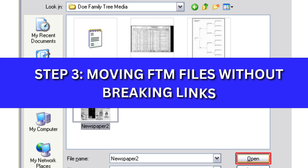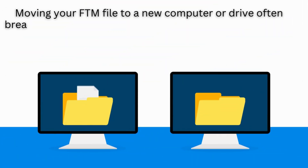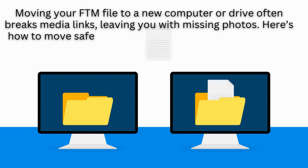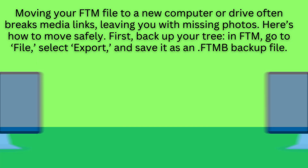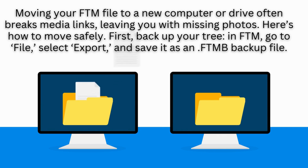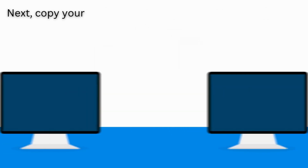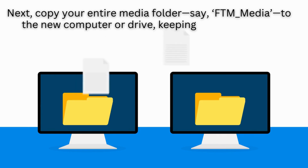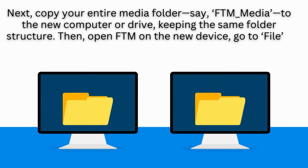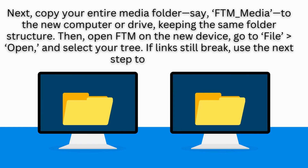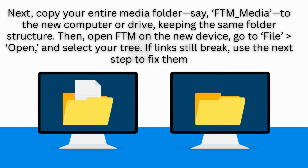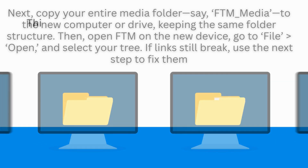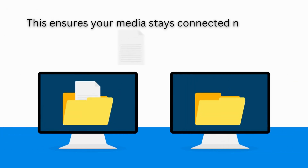Step 3: Moving Your FTM File Safely. Moving your FTM file to a new computer or drive often breaks media links, leaving you with missing photos. Here's how to move safely. First, back up your tree — in FTM, go to File, select Export, and save it as an .ftmb backup file. Next, copy your entire media folder, say FTM Media, to the new computer or drive, keeping the same folder structure. Then, open FTM on the new device, go to File > Open, and select your tree. If links still break, use the next step to fix them. This ensures your media stays connected no matter where you move your tree.